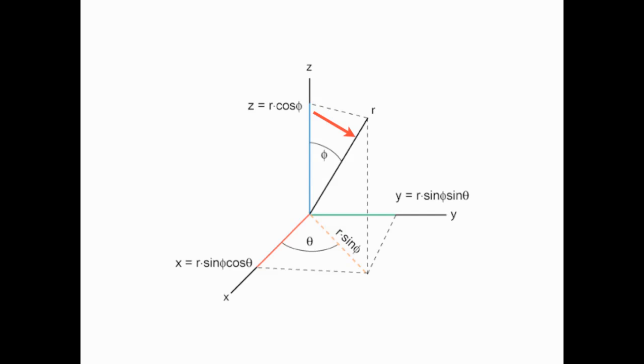So to find a point in spherical coordinates, we have to imagine going up on the z-axis rho units, and then decline by an angle of phi, and then swing over by an angle of theta.